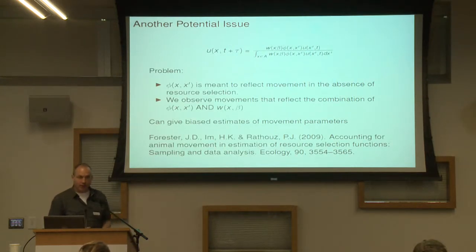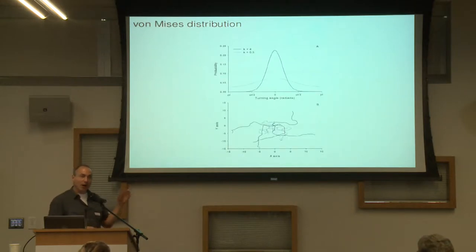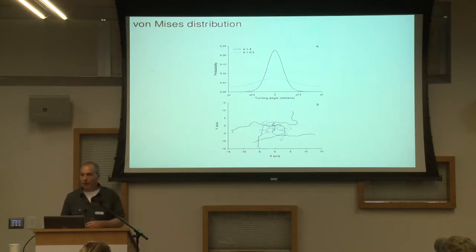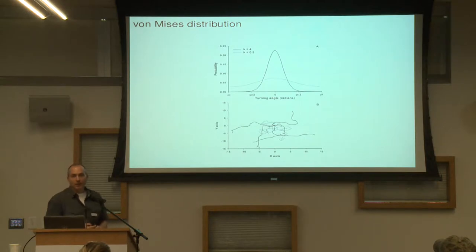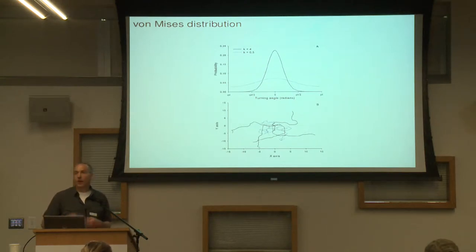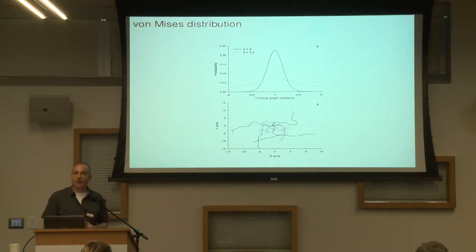Can anybody see any problems with either of those approaches? Thinking about taking your data, you have observed steps — observed distances between points, observed turn angles — and you're using that to parameterize this model. That's an important issue: this method really assumes you've got observations that are regular in time, so you've collected data systematically — every hour, every ten minutes, whatever it is. There are continuous time movement models that can relax that, but these models really make most sense if your data are regularly spaced in time.